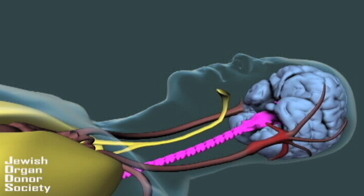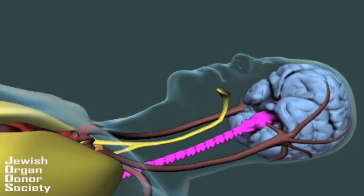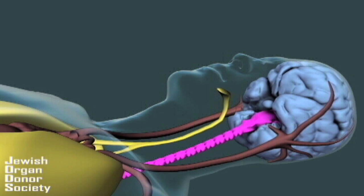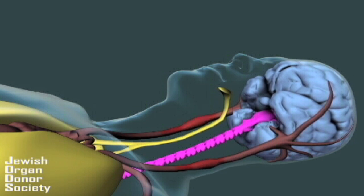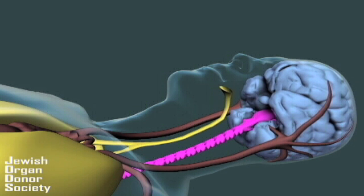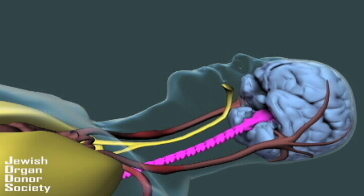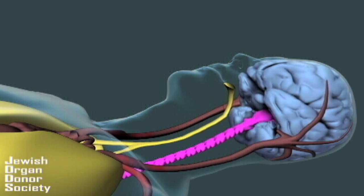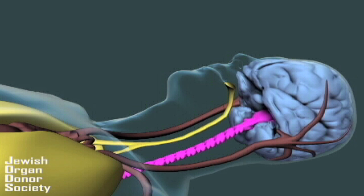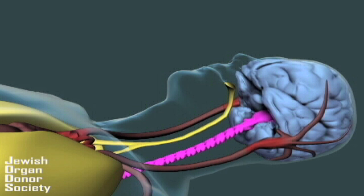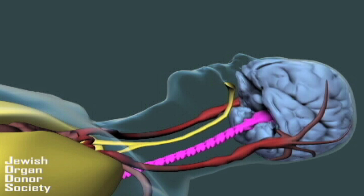How does brain death occur? If a person receives a serious blow to the head or has a major stroke, the brain might begin to swell. Since the skull is made of hard bone, it does not allow the brain to expand. Physicians can try medication or surgery to reduce the swelling. But if this does not succeed, the pressure on the brain can grow greater than the pressure of the beating heart. Once this happens, the heart can no longer force oxygenated blood into the brain. With no supply to the brain, the brain cells die due to the lack of oxygen.